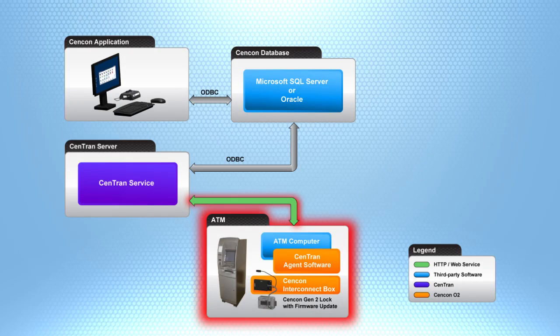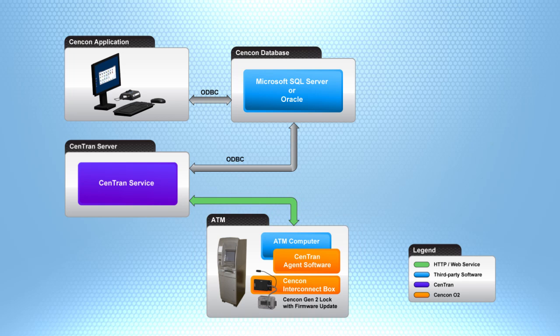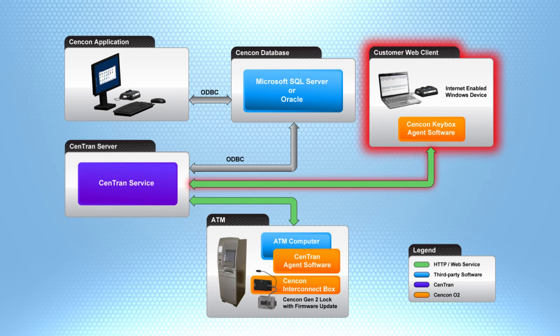When running CENTRAN 5.1 in conjunction with CENTRAN O2, you can remotely activate, audit, shelve, and manage your locks across a network. When CENTRAN 5.1 is partnered with the CENTRAN 5 keybox agent software, it allows for the remote creation, deletion, and management of users and keys.